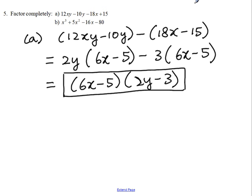Let us take a look at the second one. Factor x³ plus 5x² minus 16x minus 80. We have four terms again and all of them are unlike and we do not have any common factor.